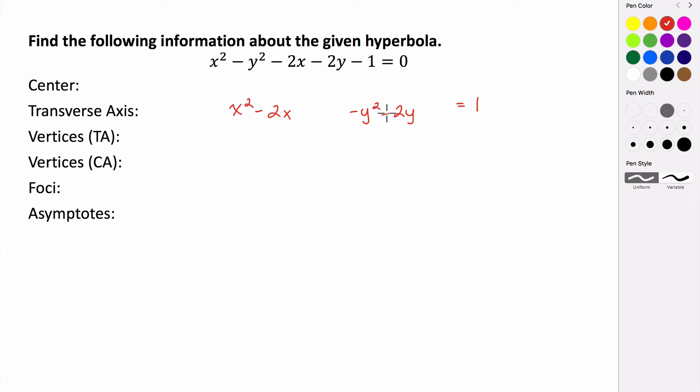Now in order to complete the square, we need our leading coefficient of each group to be positive 1. So for the y's, we're going to actually factor out a negative here. So we're going to factor out a negative, and in doing so, we are grouping this, we factor out a negative 1. That's going to make this value positive and that value positive there.